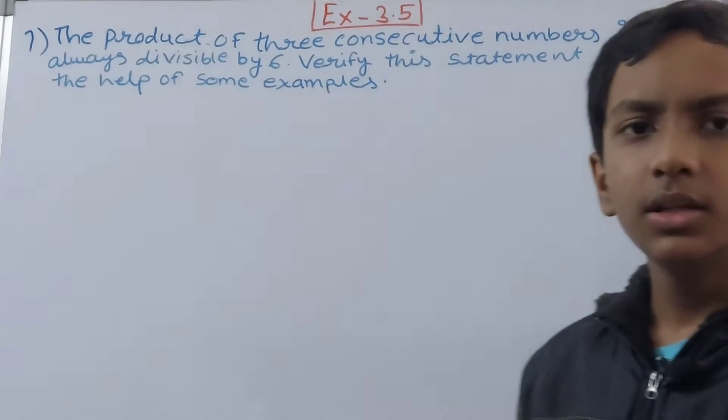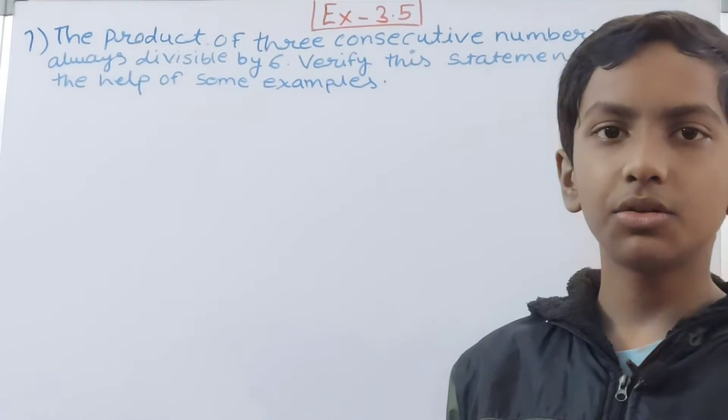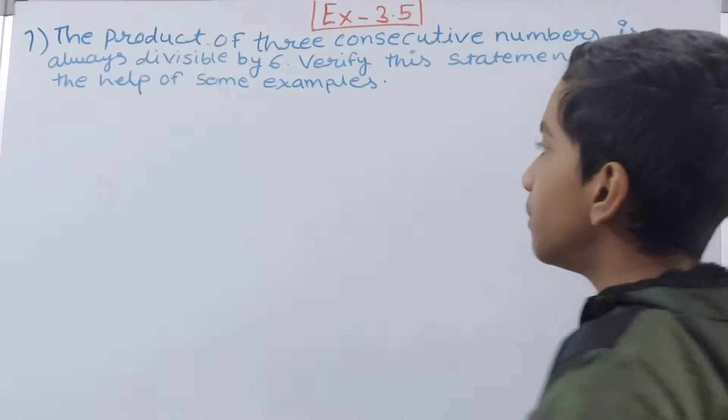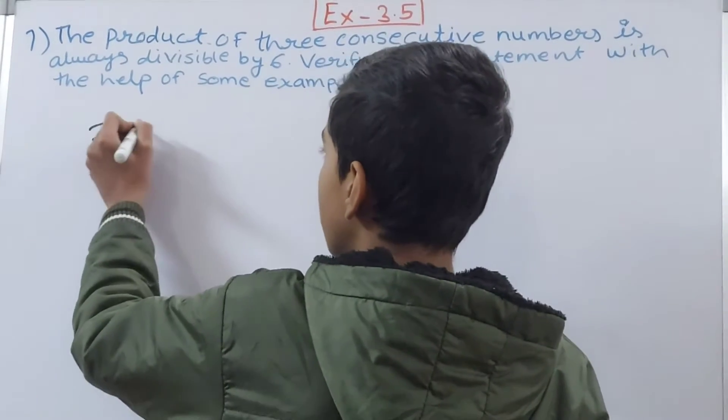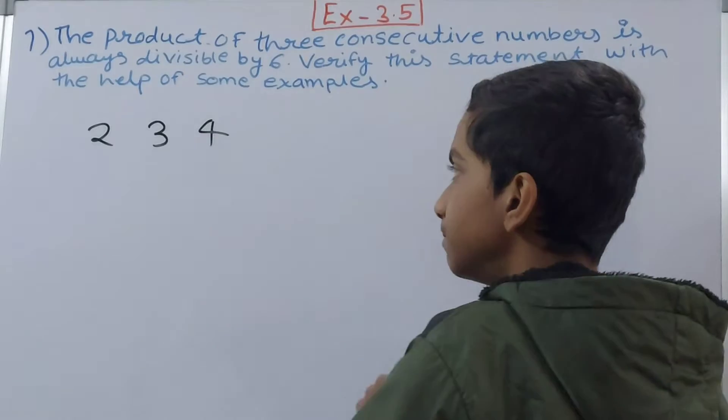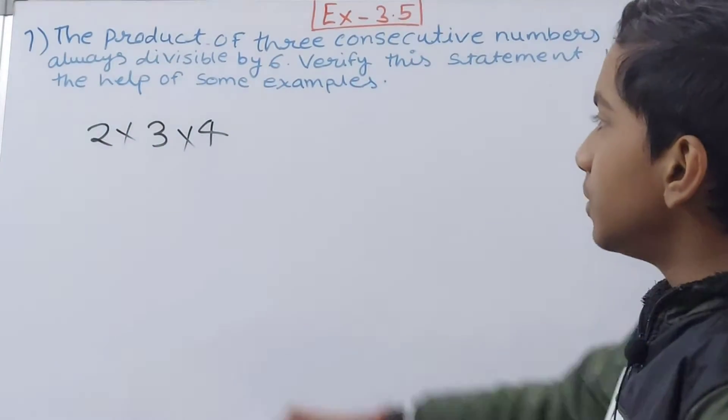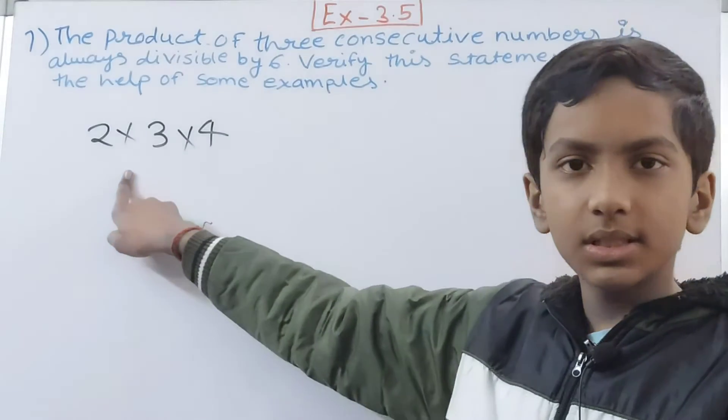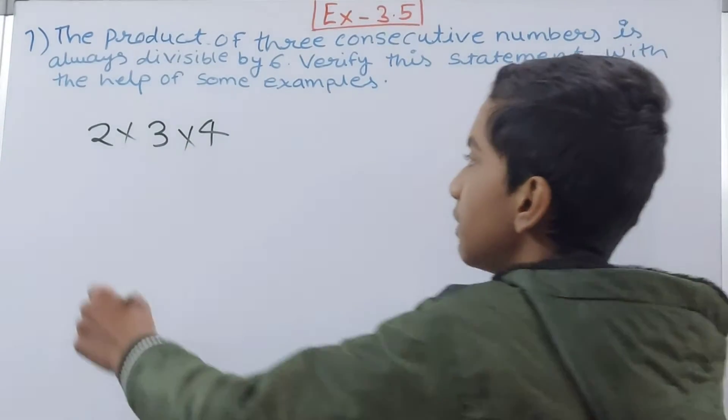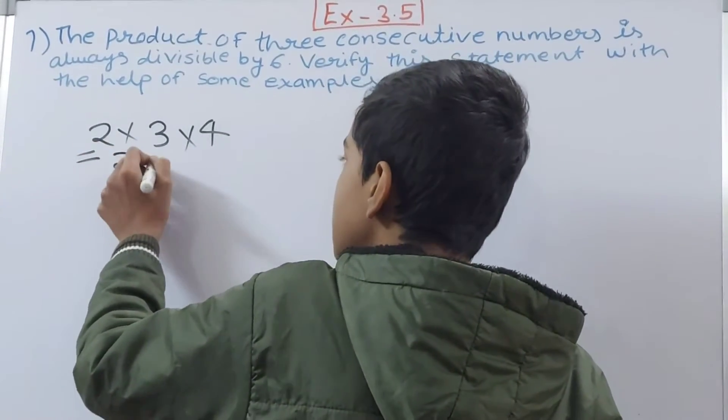Let us take some three consecutive numbers. First we will take 2, 3, and 4, and we will multiply them. So 2 into 3 is 6, and 6 into 4 is 24. Is 24 divisible by 6? Yes, 24 is divisible by 6.